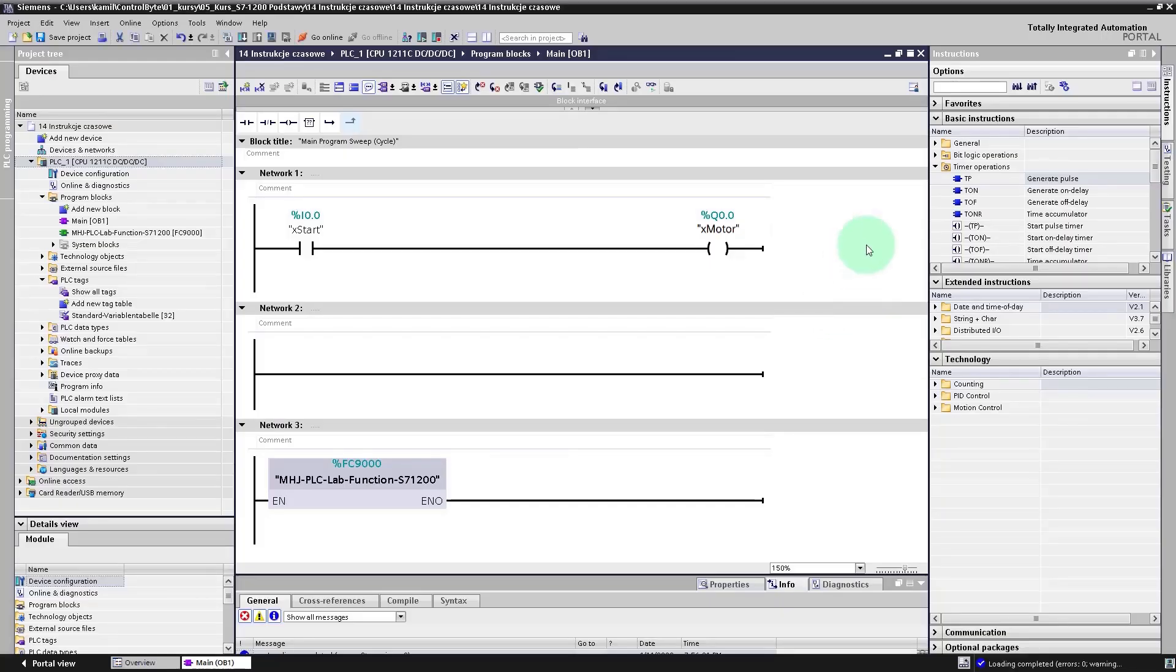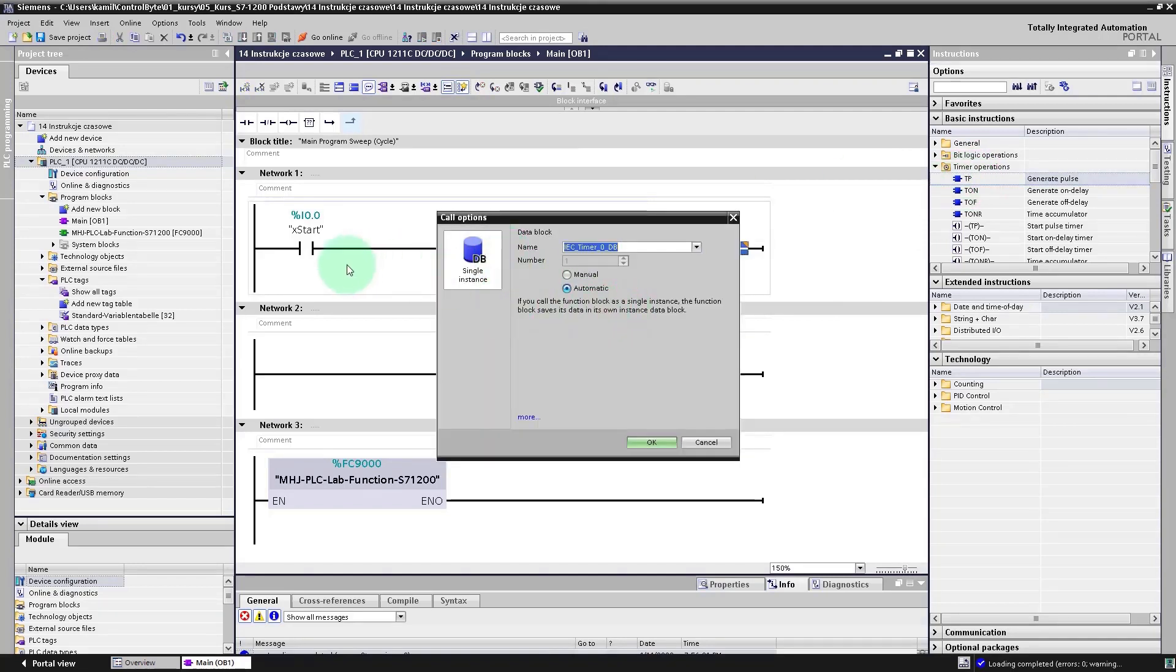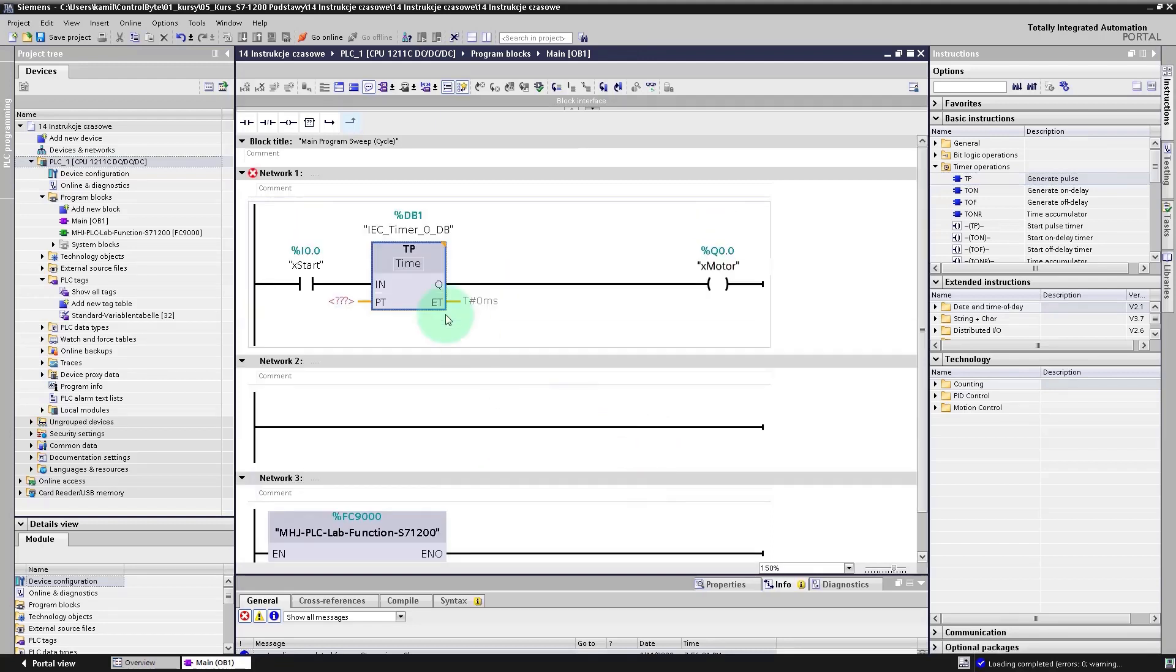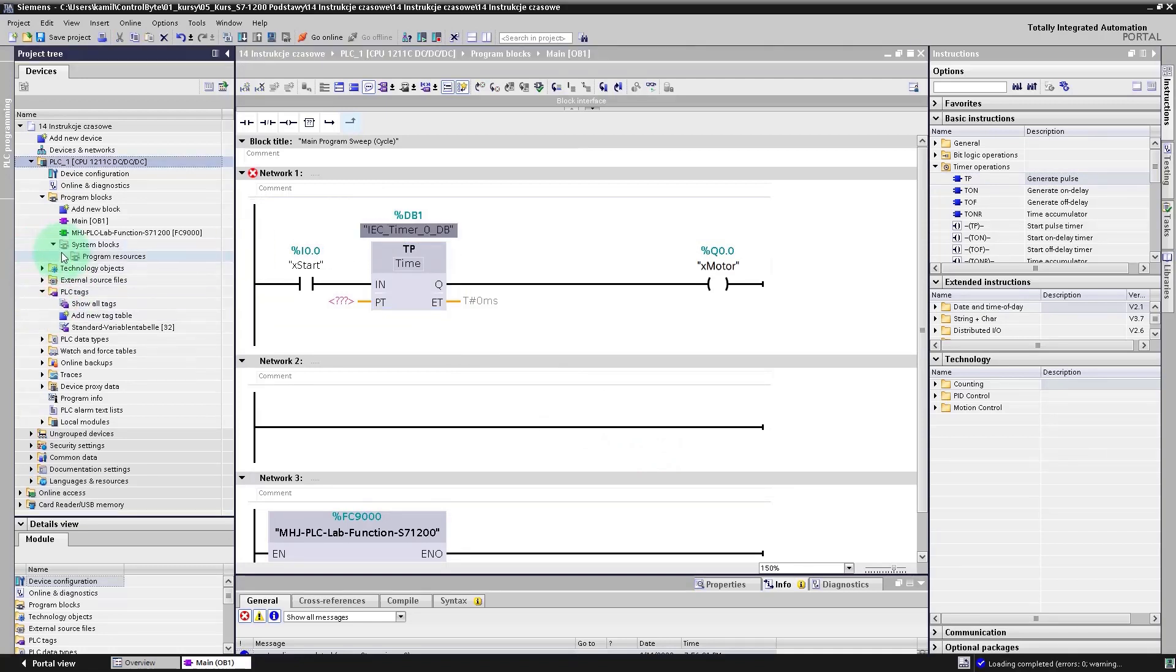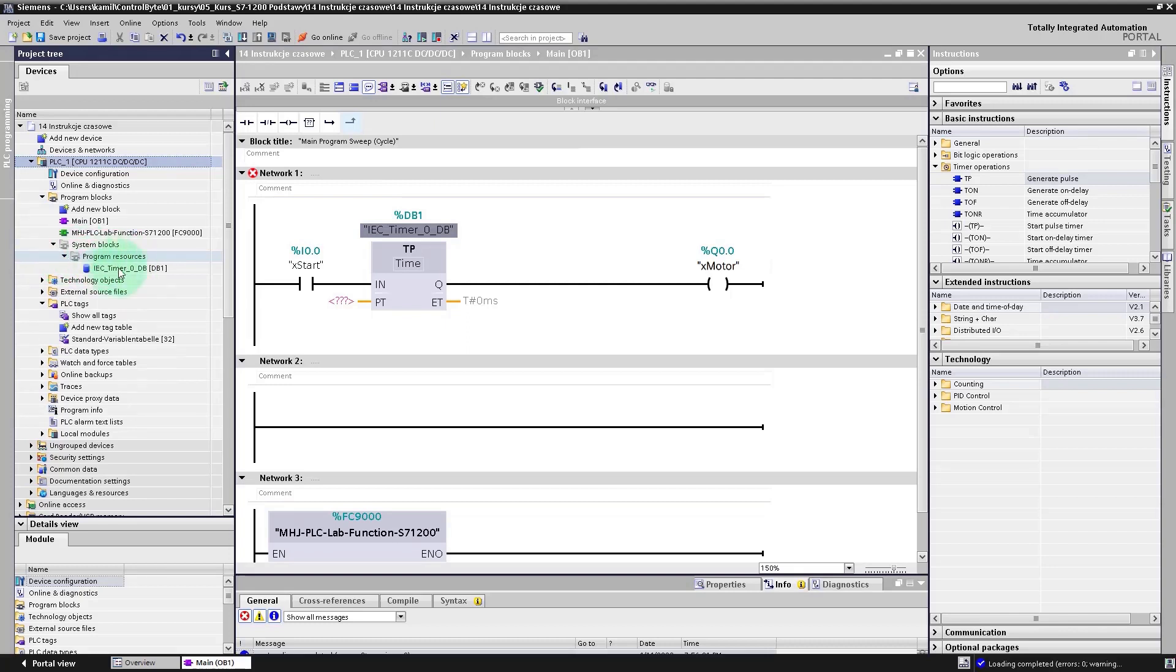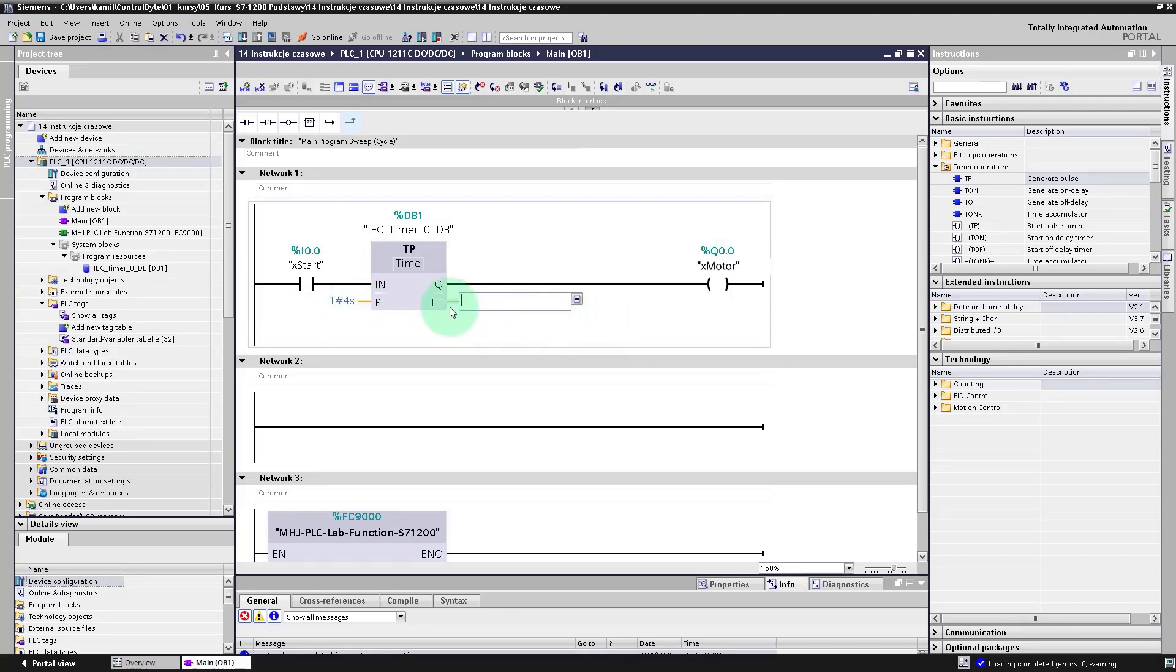OK, I will drag and drop TP timer from basic instructions here in first network. As you can see, we need to connect a data block to this timer. Click OK here. All declared data blocks you can find in project tree. Go to system blocks folder, next program resources. And here you will find all data blocks for timers, counters, etc. Next, add preset time. Just type here T hashtag 4S. It means that the pulse on the output of our block will last 4 seconds.